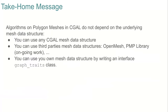The take-home message for this part is that any CGAL algorithm working on polygon meshes does not depend on the data structure. You can use any CGAL mesh data structure you want, or even a third-party mesh data structure. CGAL has provided graph traits for OpenMesh and also for the PMP library — which will likely be available in the 5.2 release. Importantly, you can also use your own data structure directly in CGAL algorithms by writing this small graph traits interface.